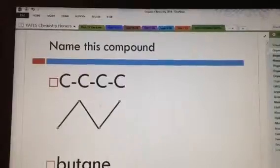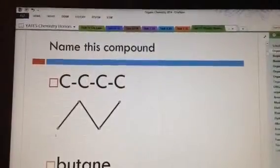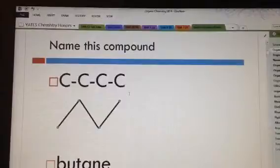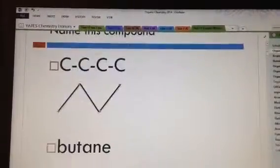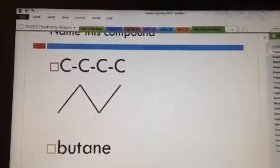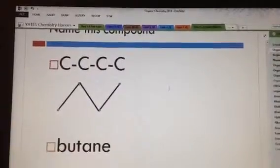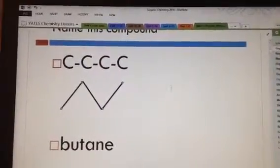This is four carbons. This is representing four carbons. So that would make this butane. One, two, three, four. The prefix for four is but, so that's butane.